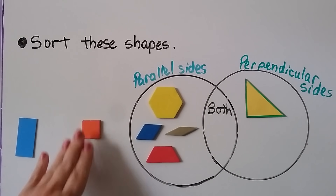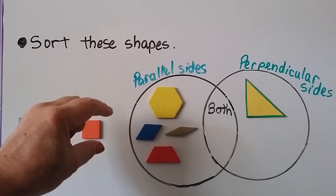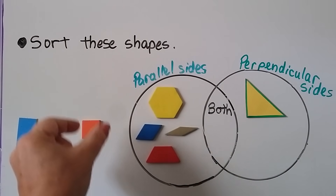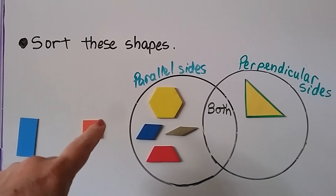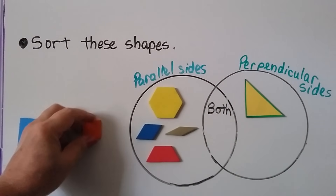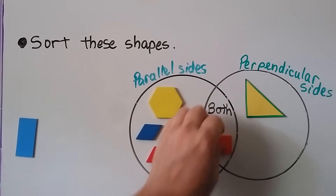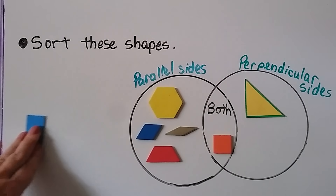Now what about the square? Do you see parallel sides? I see the top and the bottom and I see here — so yes, it has parallel sides. Does it have perpendicular sides that make right angles? Yes, it does. Inside there are four right angles in a square.